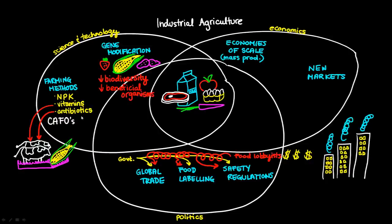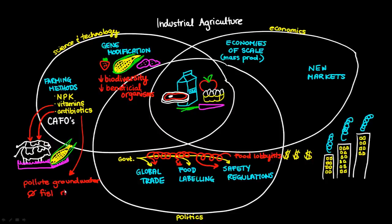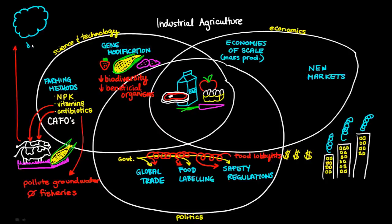The downside to these farming improvements is that pesticides and fertilizers can filter into the ground and pollute the groundwater, and that polluted groundwater can damage fisheries downstream. Additionally, the methane byproducts from CAFOs — confined animal feeding operations — can damage the ozone layer. That's another potential environmental side effect of industrial agriculture.